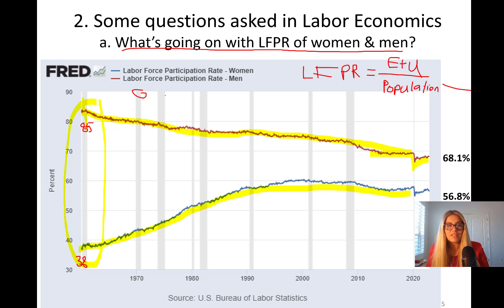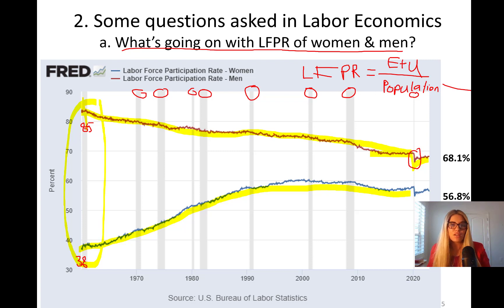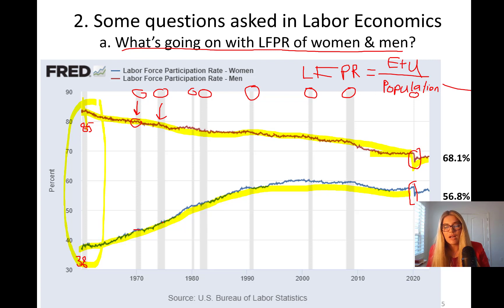The green shaded areas on this chart are economic recessions — periods when the GDP, or gross domestic product, of the country declines for consecutive quarters. We had a major recession due to the pandemic, which caused a huge dip because it limited people's ability to work. Children were out of school, so people dropped out of the labor force at a very high rate. Whenever you see a recessionary period, the labor force participation rate tends to go down.